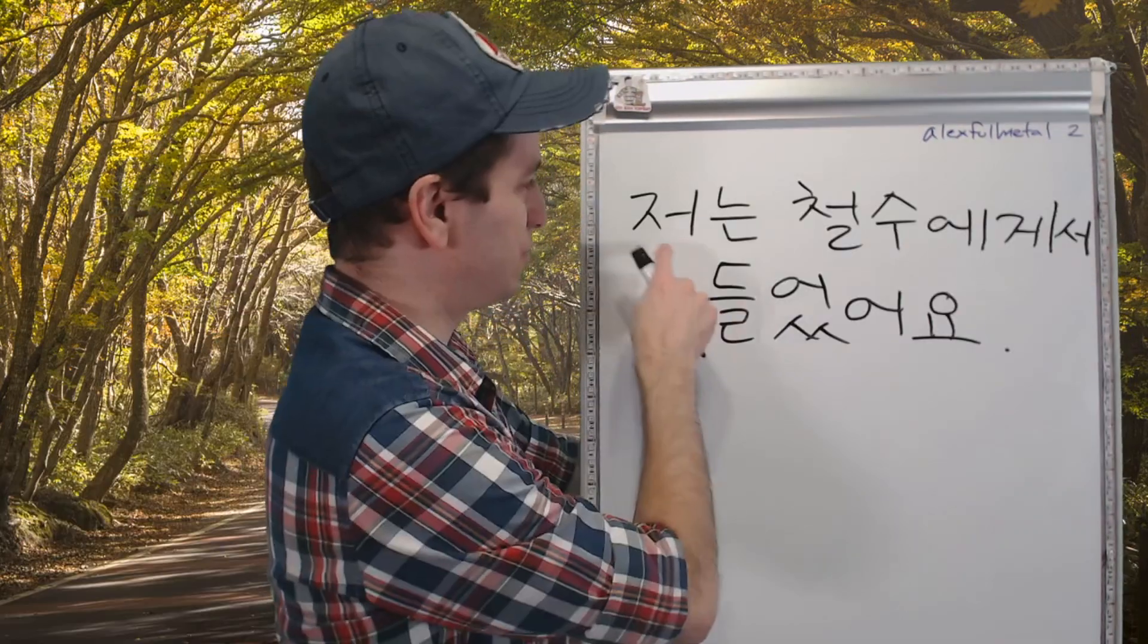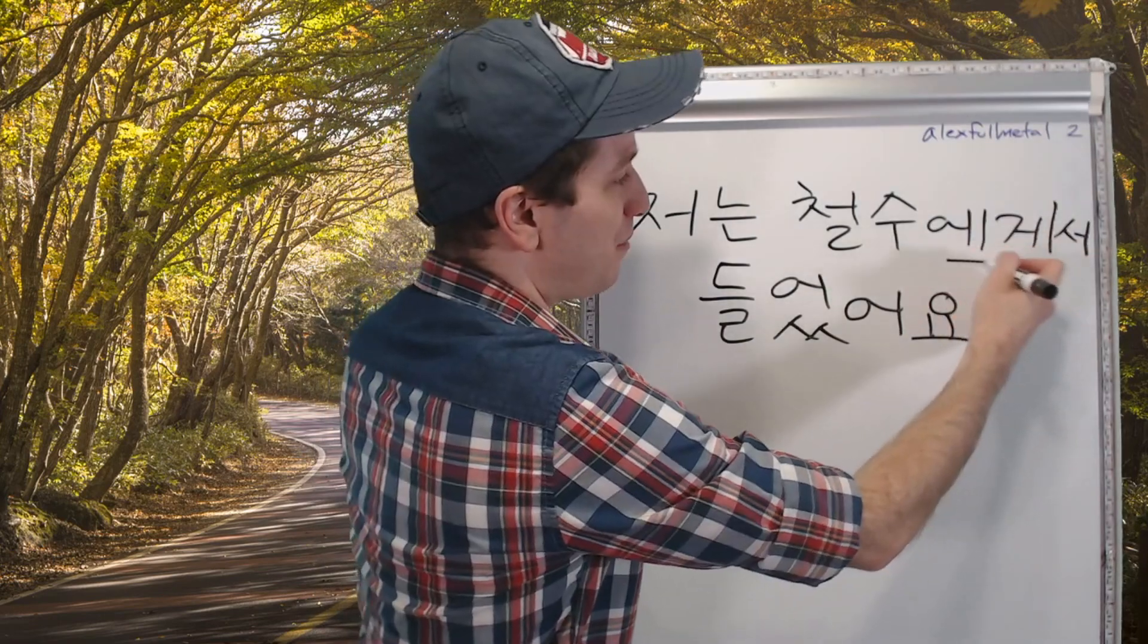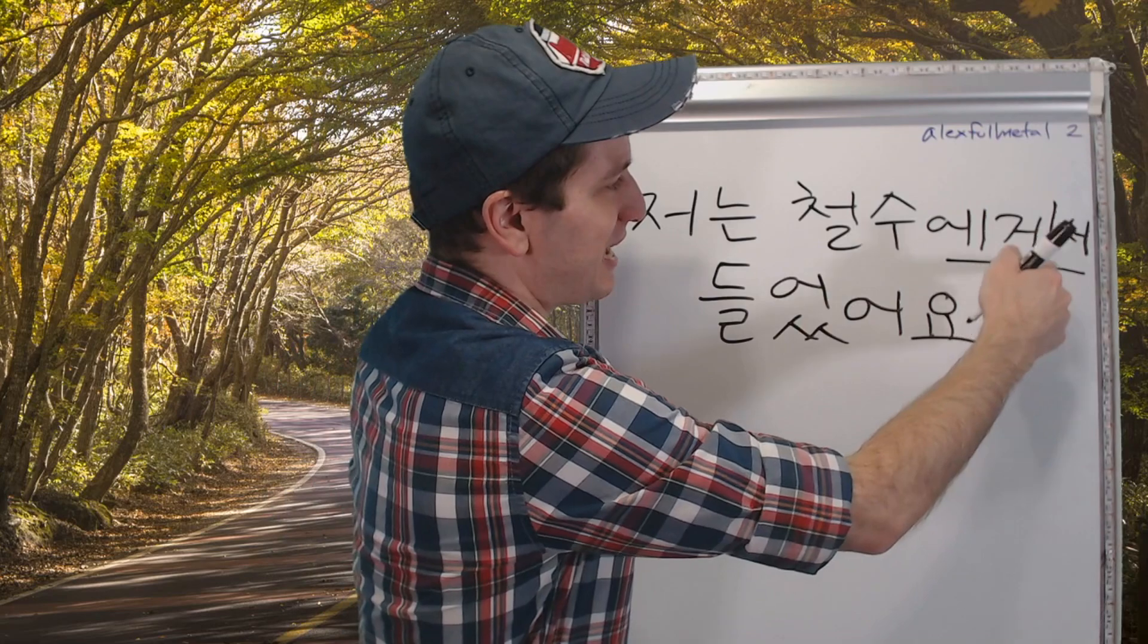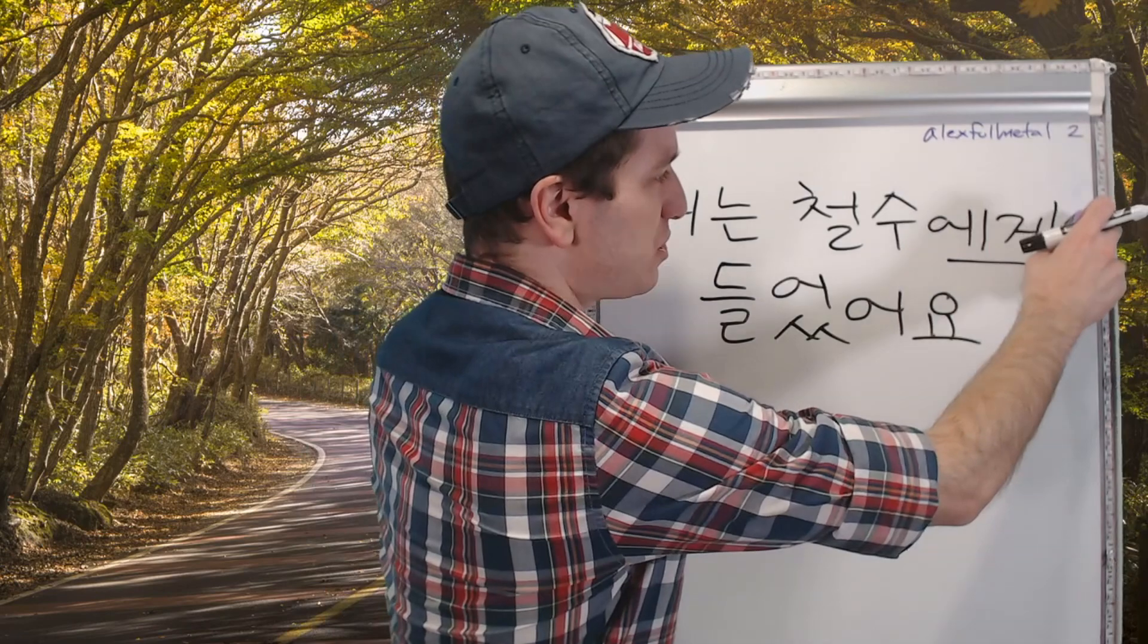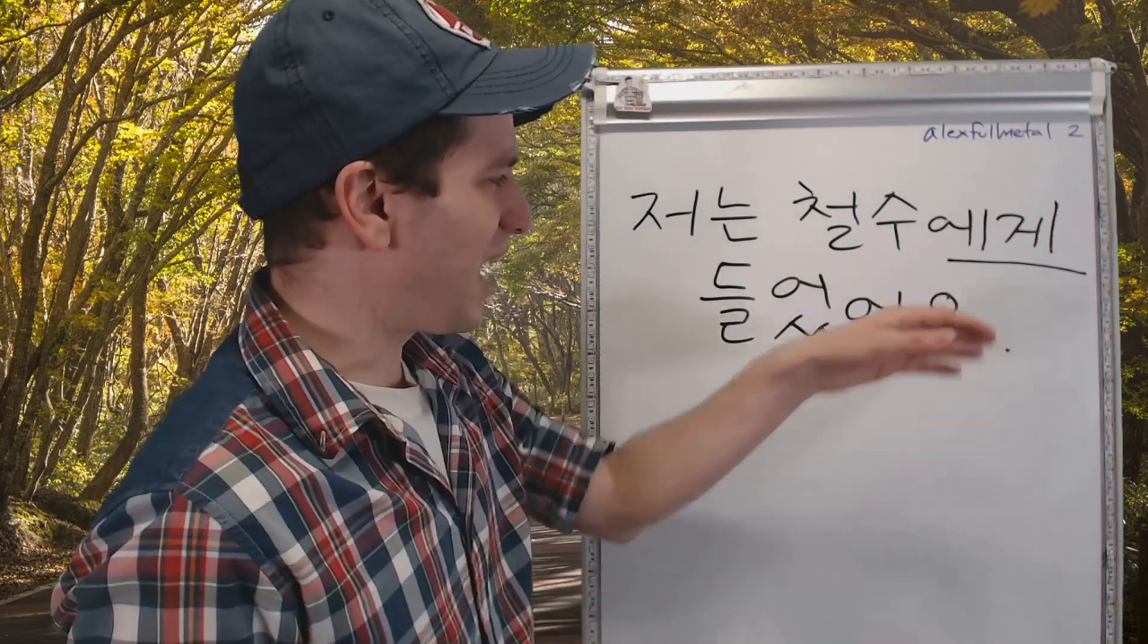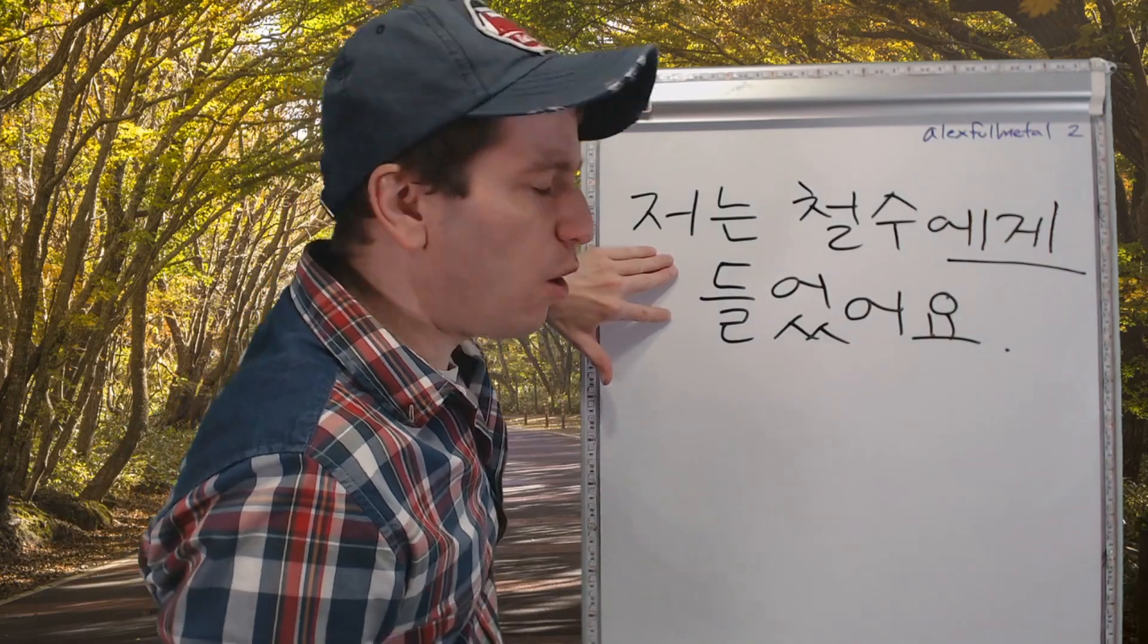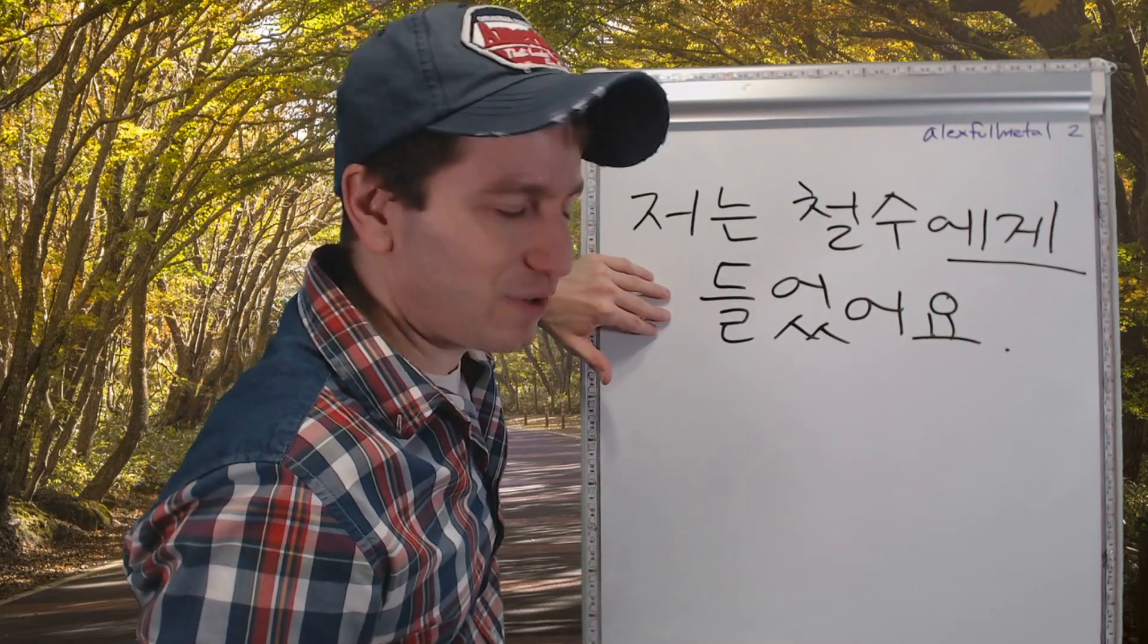So let's look at an example. 저는 I, 찰수에게서, from 찰수, I heard. 저는 찰수에게서 들었어요. I heard it from 찰수. 서 is completely optional. So now we can just do 에게. And that's perfectly fine. Could this possibly mean I heard it to 찰수? It has to mean from. You'll always know whether it means to or from because of the verb that will come after it.